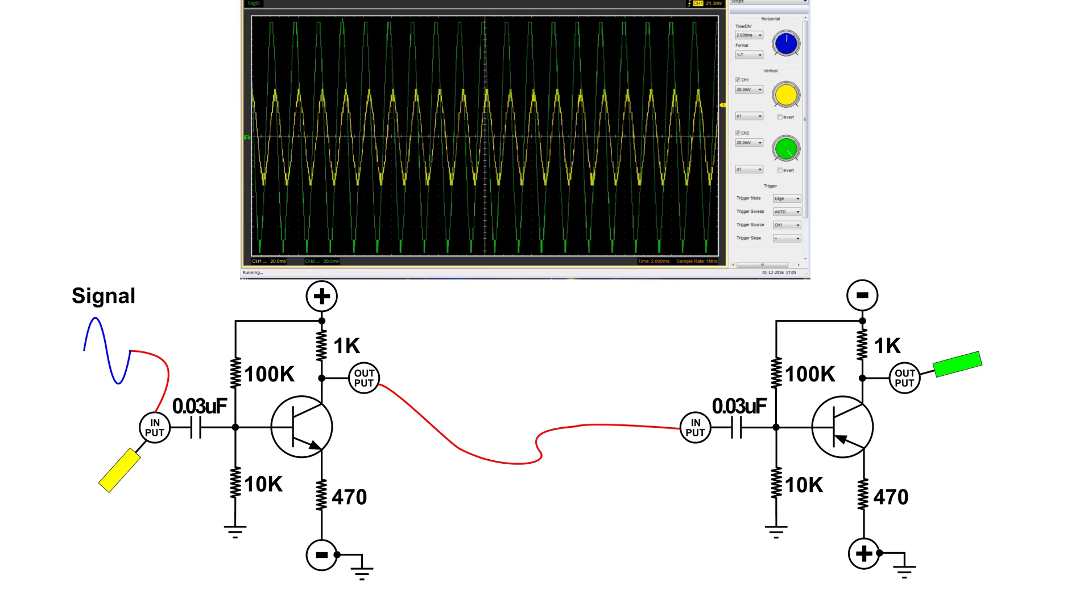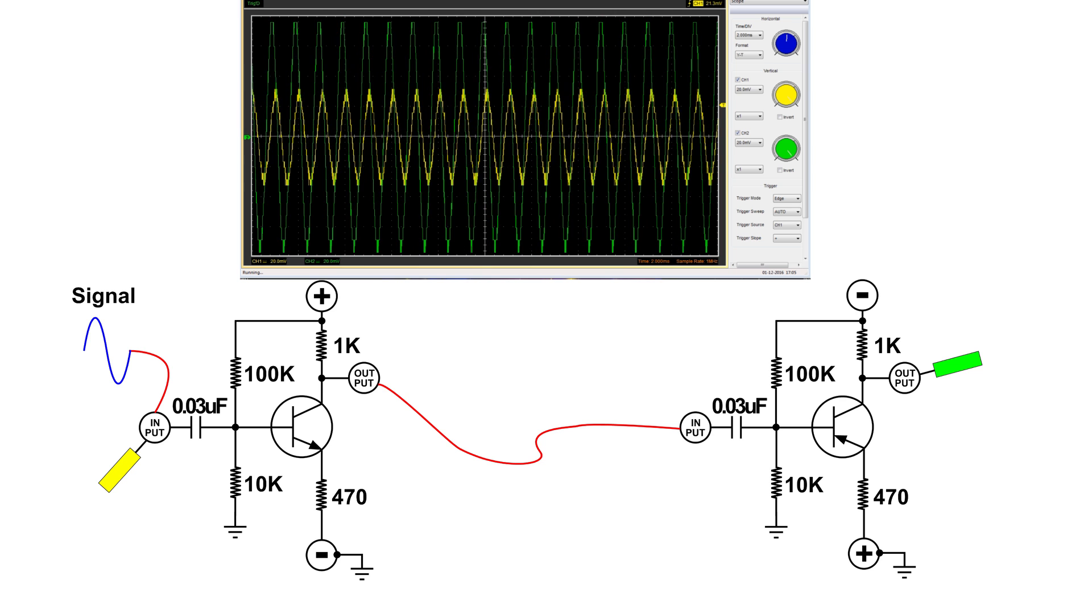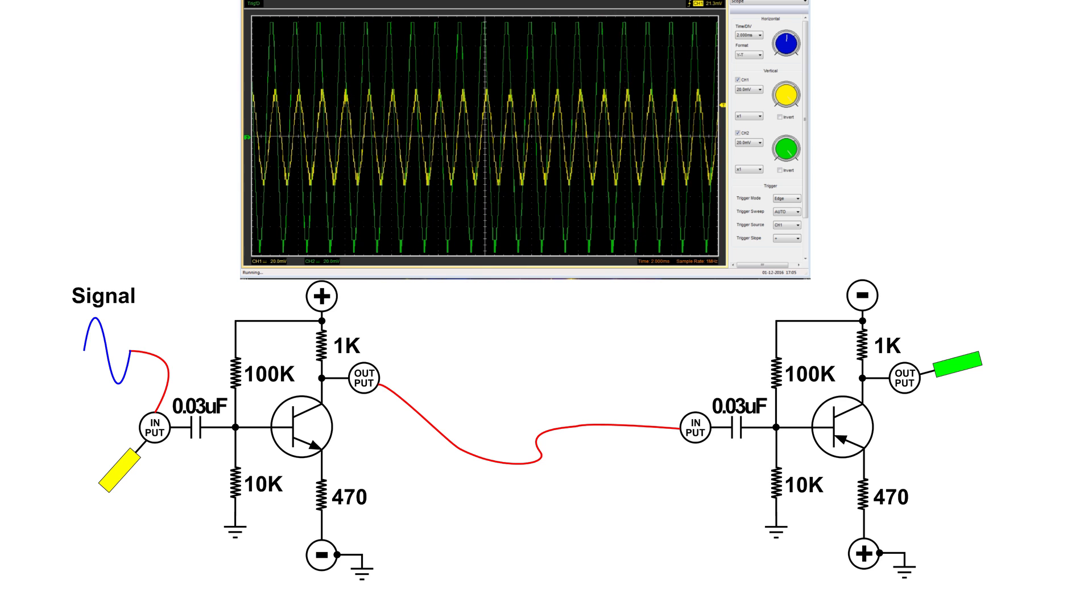And this is what it looks like. The yellow is the input on the first stage and look at that output. It fills the entire oscilloscope screen. So this is a two-stage amplifier.